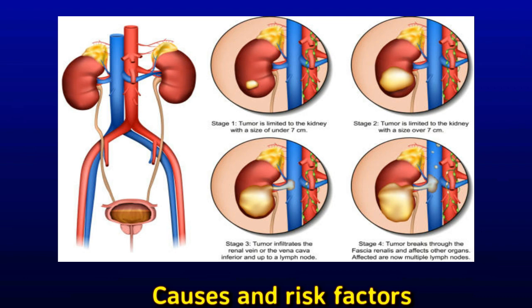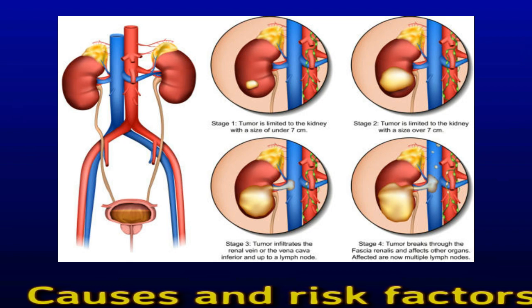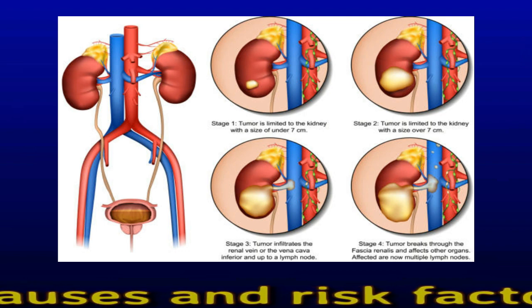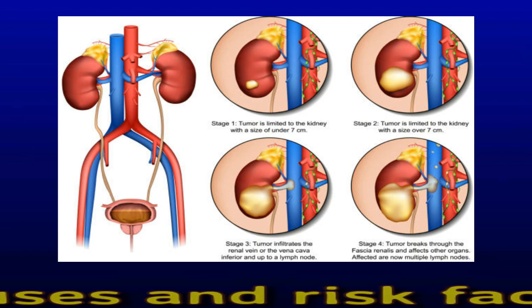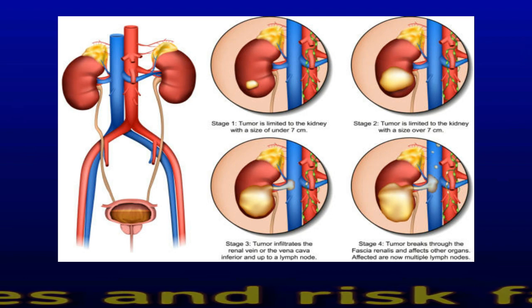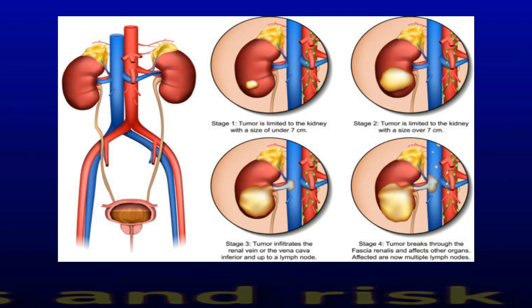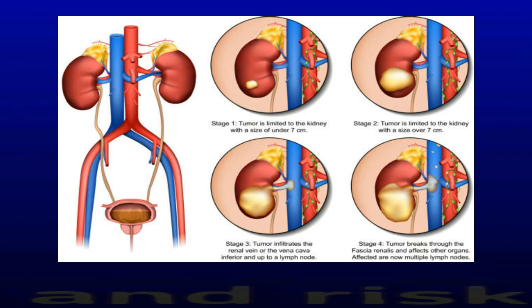Neurofibromatosis type 1 is a hereditary condition associated with the development of both benign and cancerous tumors. Other features include high blood pressure, learning disabilities, and bone problems. Carney complex is a very rare hereditary condition associated with skin pigmentation, benign tumors of connective tissue, and tumors of the endocrine glands. Familial adenomatous polyposis is a syndrome that causes a person to develop many polyps in the large intestine, and it can increase the risk of adrenal cancer, although most adrenal tumors in people with this condition are non-cancerous.